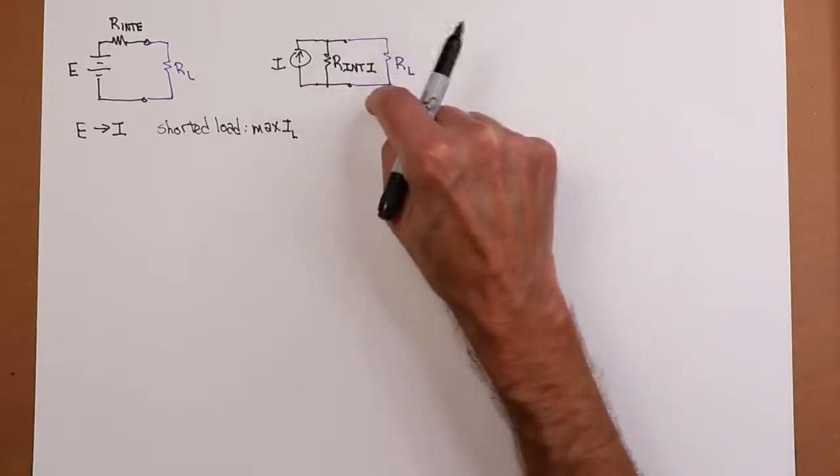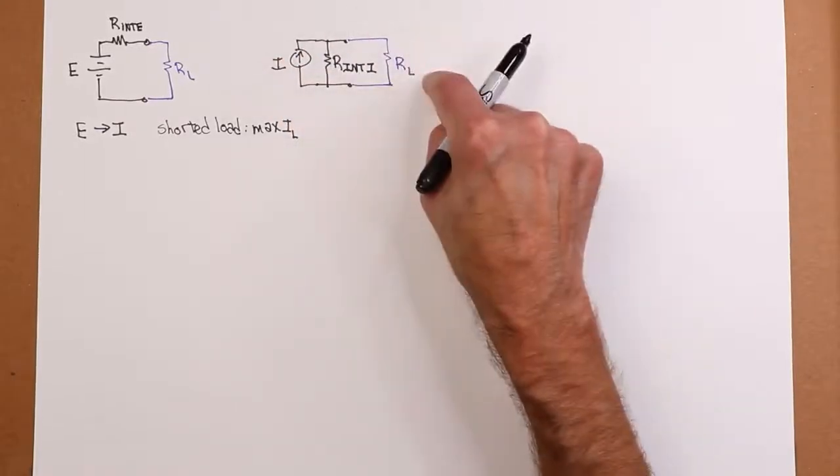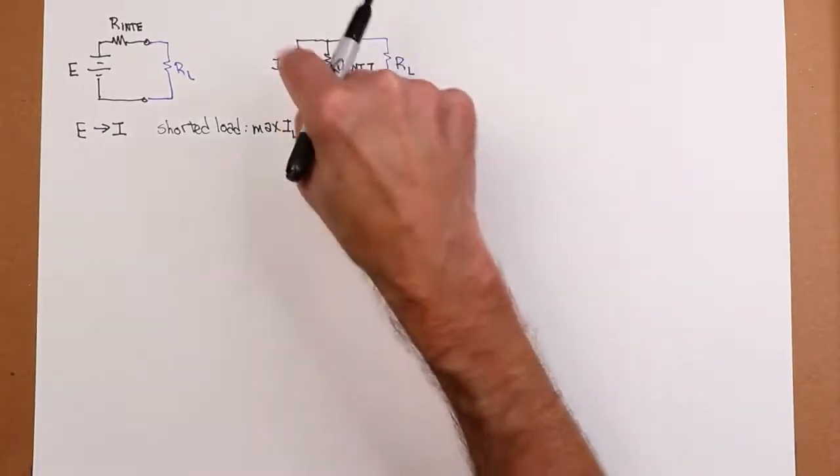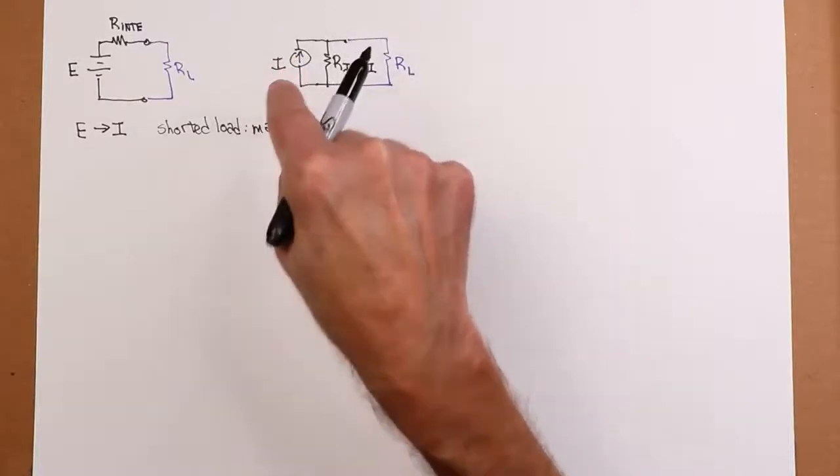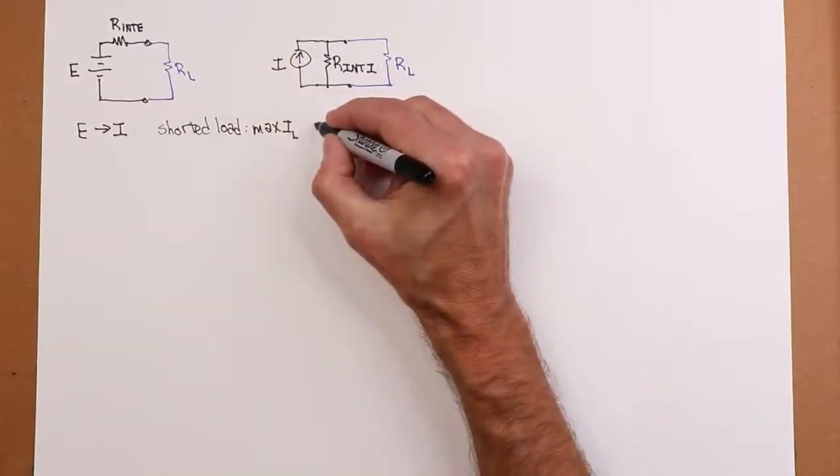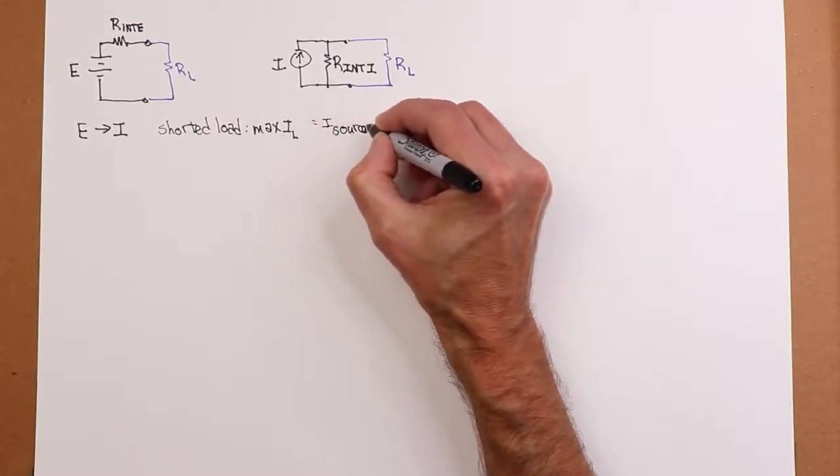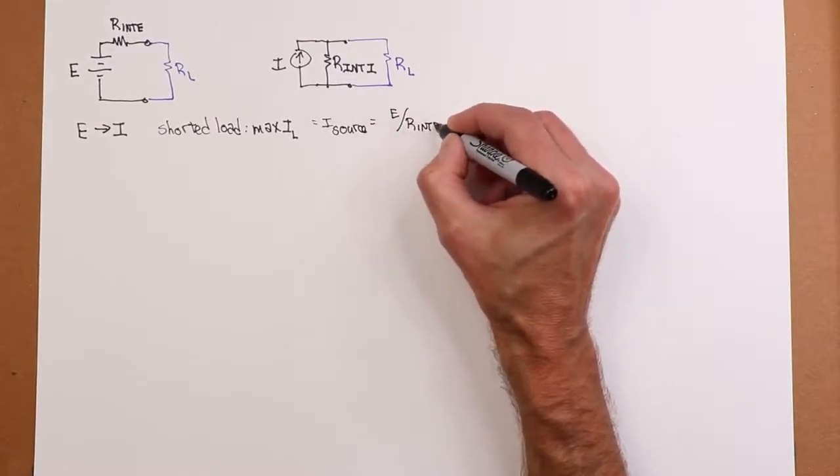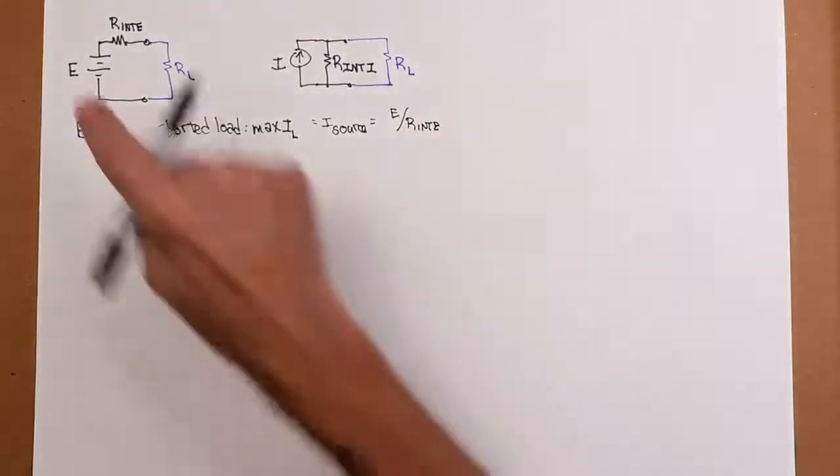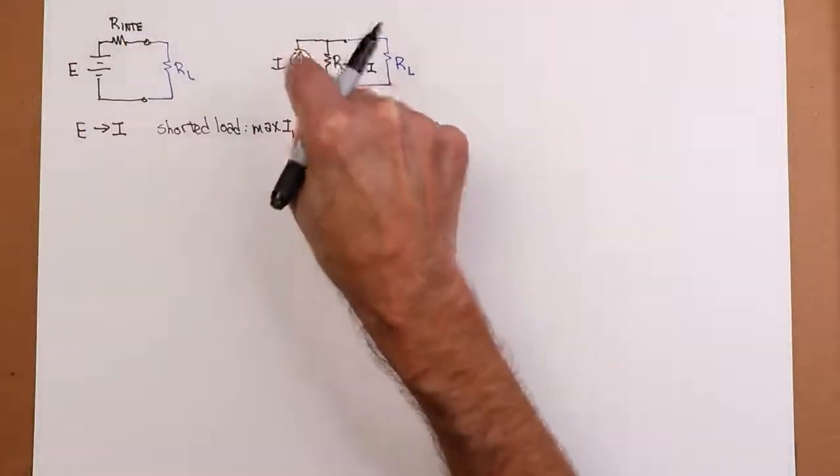So this hopefully will tell us what the value of the current source must be. So that is the I source, which is equal to E divided by R internal E. So take your E divided by this, you get a current. That's the current we should be using over here.